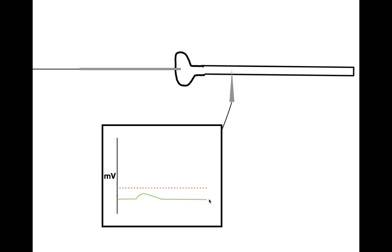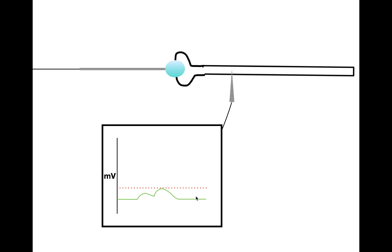Now, what if we were to send in multiple signals? Let's send in two signals sequentially. We send in signal number one, then signal number two. What we see is that when signal number one is sent in, the cell depolarizes up to a certain point and then repolarizes back down. But before it can repolarize all the way back down to the resting potential, we send in the second stimulus, causing the cell to depolarize even further up. So with each sequential stimulus, we see a sequential buildup in the synaptic potential.